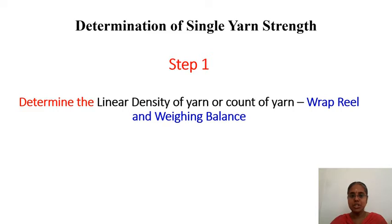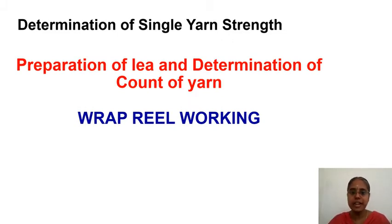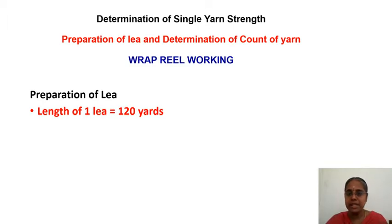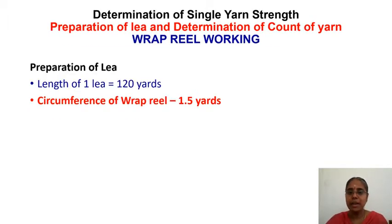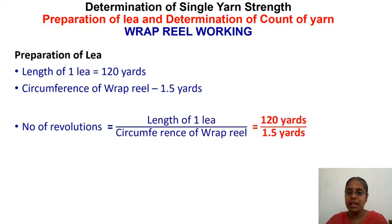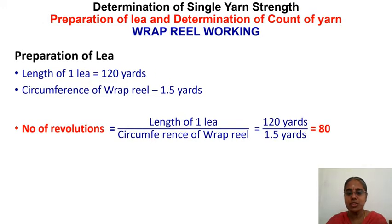Let us go into the determination of linear density and count using the wrap reel and weighing balance. A lea, as mentioned in the CSP test, is a length of yarn of 120 yards prepared in circular form. The wrap reel circumference is 1.5 yards. So the number of revolutions to set is 120 divided by 1.5, which equals 80 revolutions, to prepare the lea.